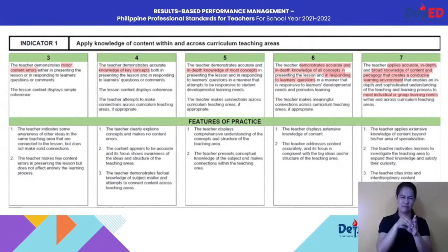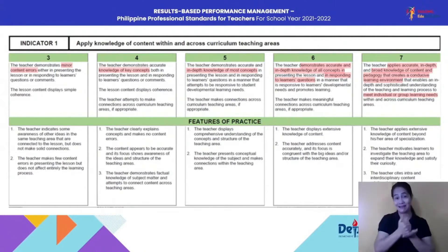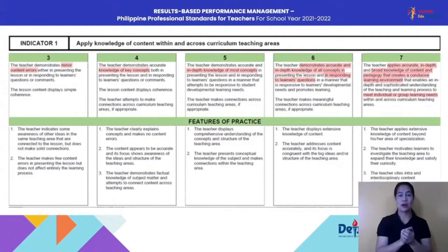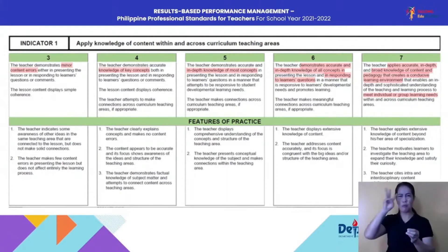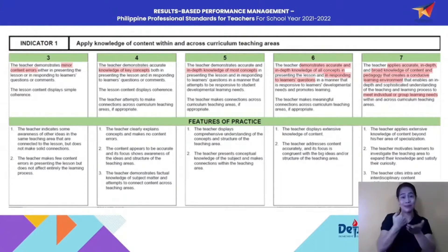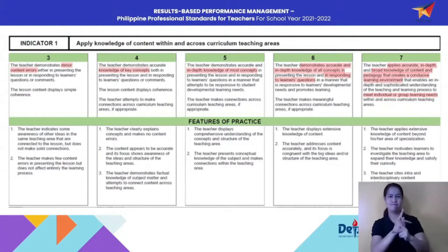This COT rubric can help our raters as they observe their teachers. But if you are a classroom teacher — the ratee — this rubric can also help you become more aware of your practice. The features of practice there can help us visualize what kind of outstanding practice this rubric looks for. That's it for Objective 1, our first classroom observable indicator.